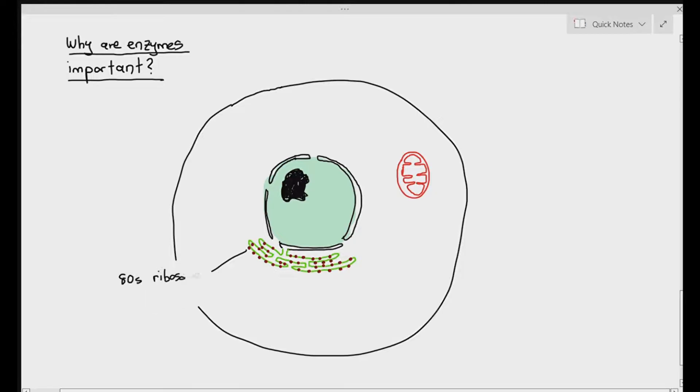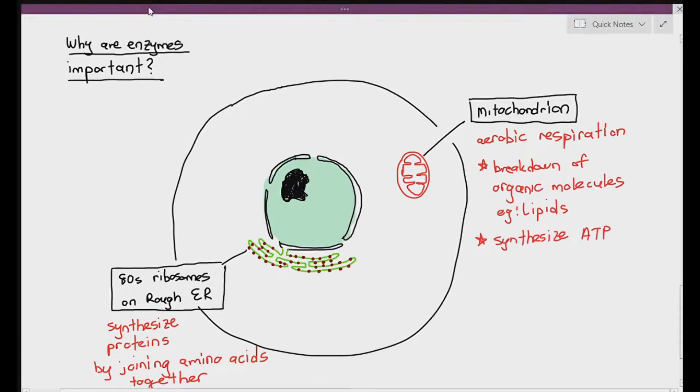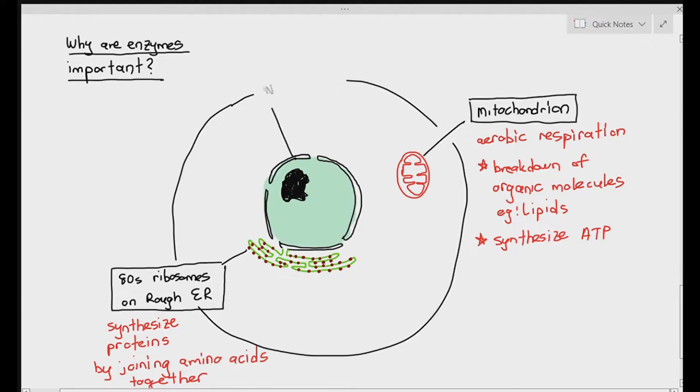You also see the mitochondrion on the right side, the one in red. And the mitochondrion has a double membrane where it has a smooth outer membrane and folded inner membrane. That's just a revision. So the function of ribosomes on the rough ER are to synthesize proteins by joining amino acids together. The mitochondrion carries out aerobic respiration where they break down organic molecules such as lipids and even pyruvate.